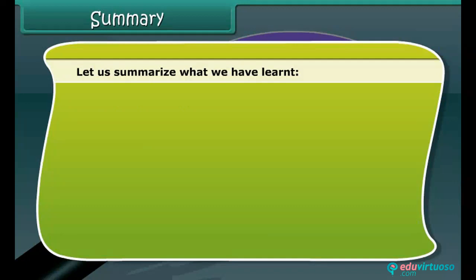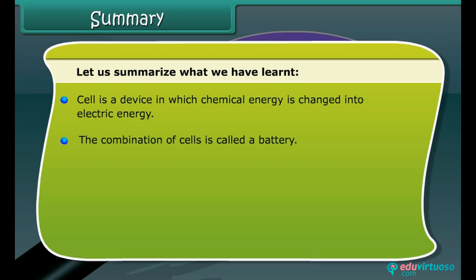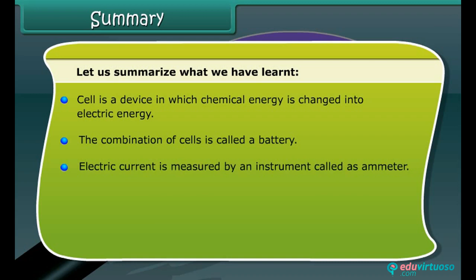A cell is a device in which chemical energy is changed into electric energy. The combination of cells is called a battery. Electric current is measured by an instrument called an ammeter. Metals and inorganic salts are good conductors. Non-metals and organic compounds are insulators.